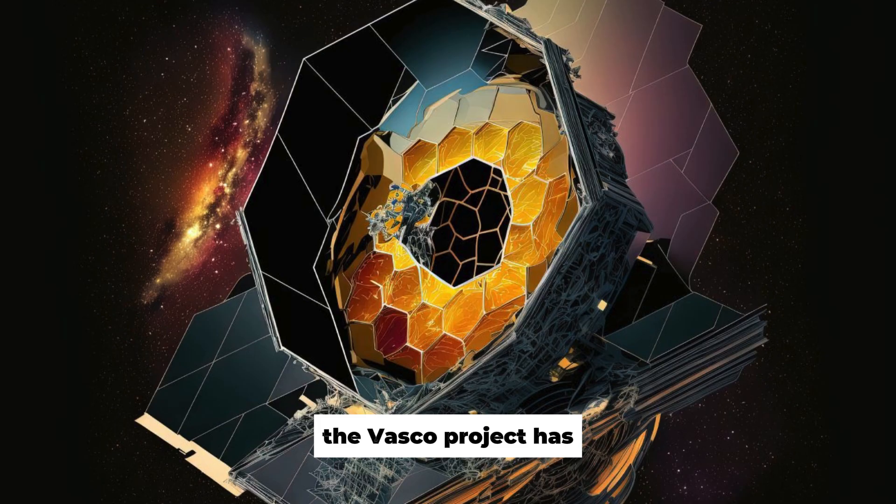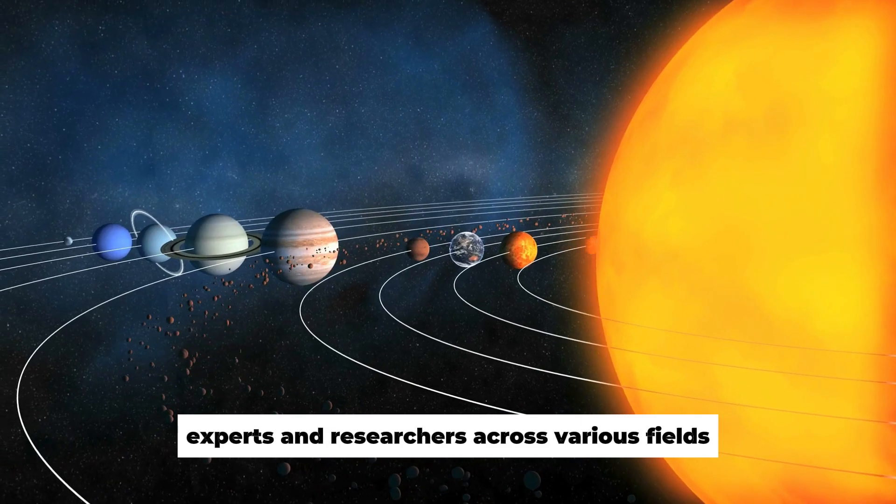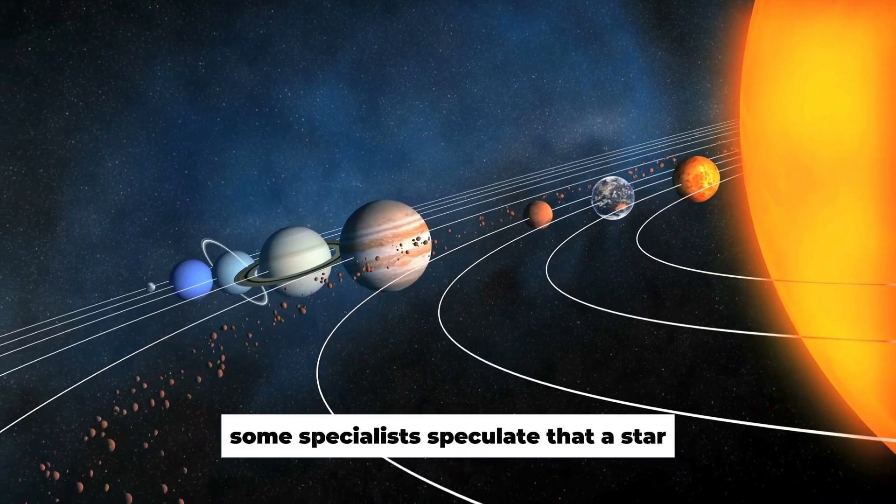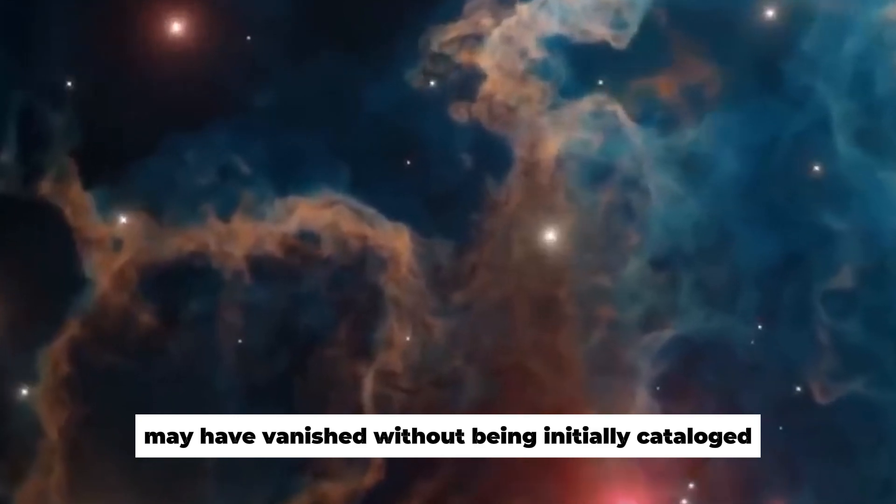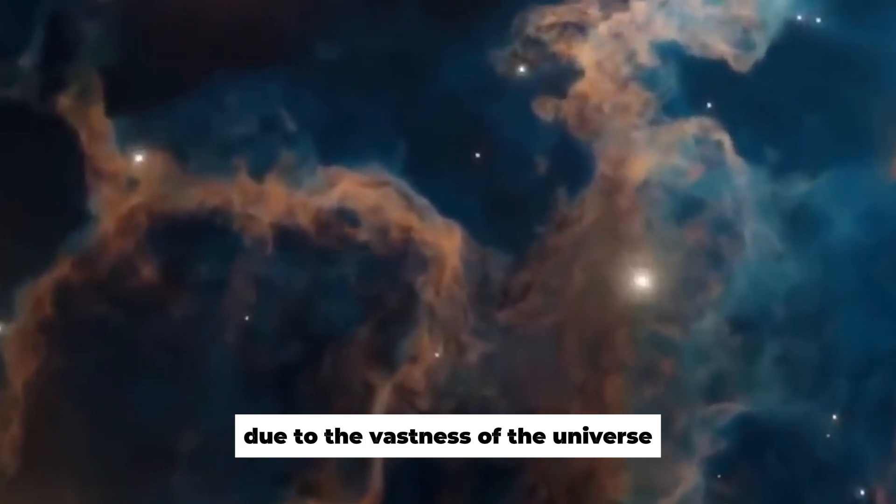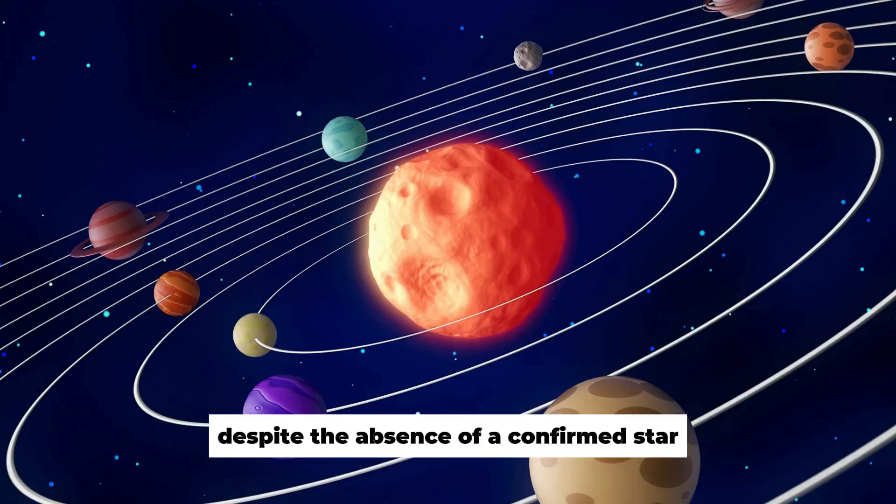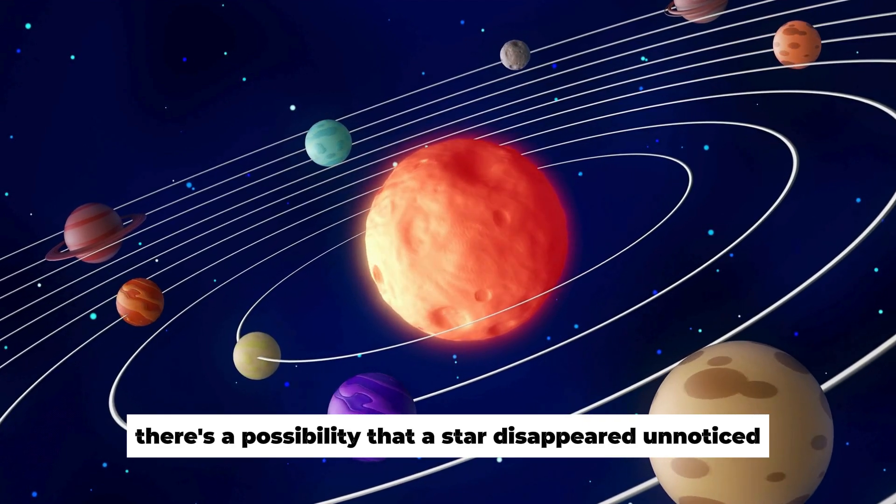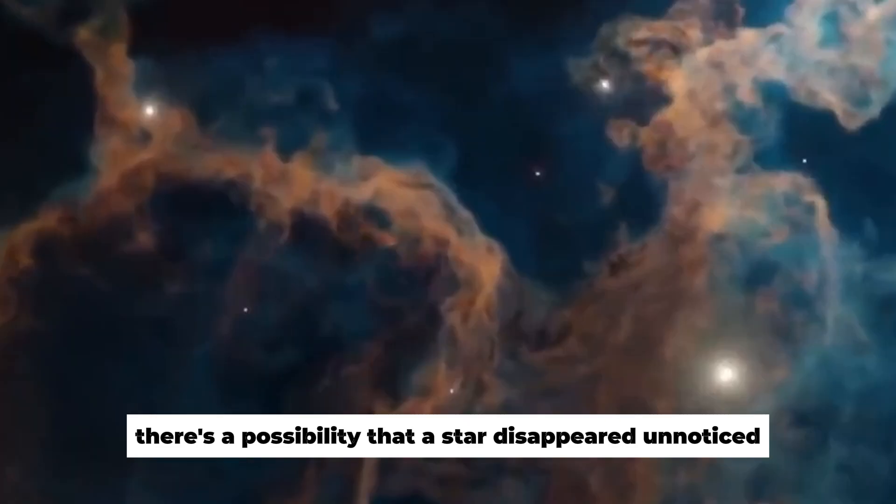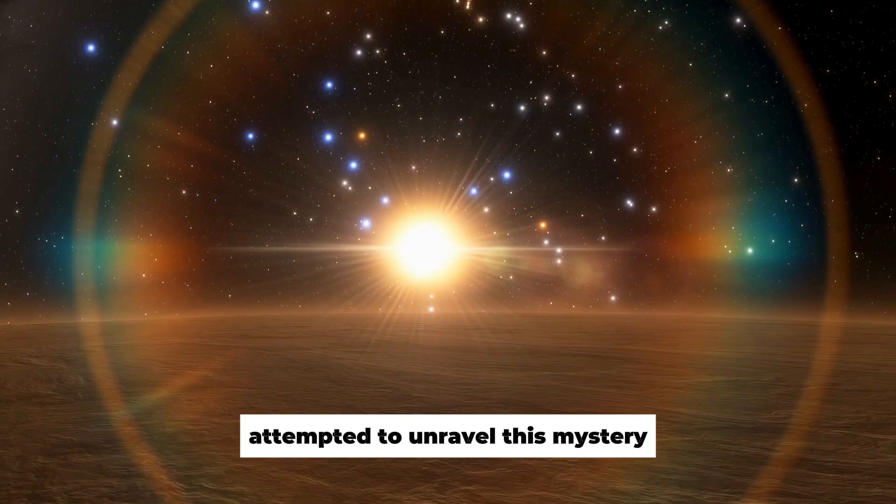Nevertheless, the Vasco project has attracted considerable attention from astronomers, experts, and researchers across various fields. Some specialists speculate that a star potentially crucial for the project may have vanished without being initially catalogued due to the vastness of the universe. Despite the absence of a confirmed star, Roel and the team of experts remain committed to the Vasco project. There's a possibility that a star disappeared unnoticed, challenging the conventional supernova process. Various approaches have been attempted to unravel this mystery.